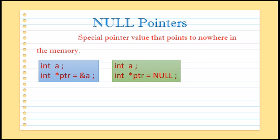Now we will see how we can initialize a pointer variable as a null pointer. Here again, first we have declared one integer variable that is a. In the next line we have declared one pointer variable and we have initialized it with the word NULL. That means pointer variable ptr will not hold any address — that is, pointer variable ptr is not pointing anywhere in the memory location.